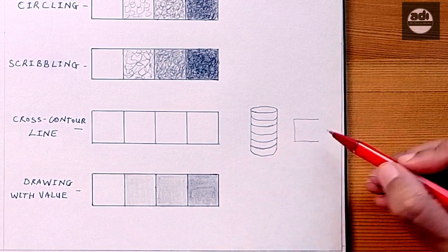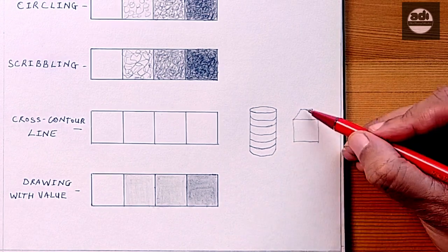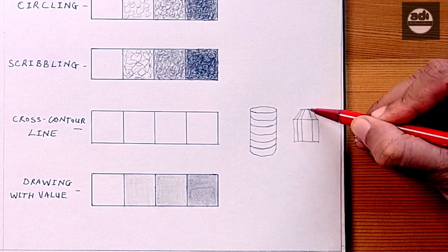Cross contour lines can be used to represent value as well. The closer the lines, the darker the value.